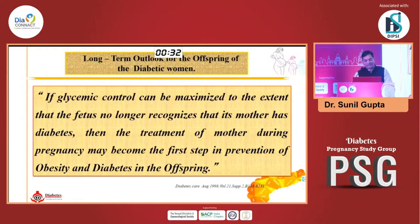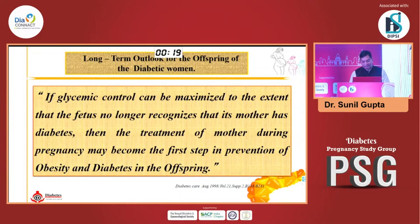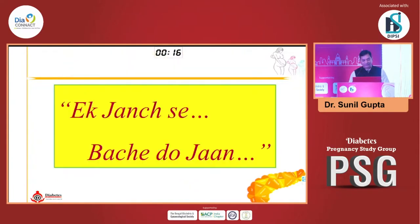The final goal is glycemic control of diabetes to the extent that the fetus no longer recognizes that its mother has diabetes. Treatment of the mother during pregnancy is the first step in the elimination of obesity and diabetes in offspring of diabetic mothers — and that is primordial prevention.